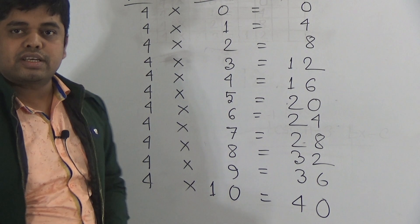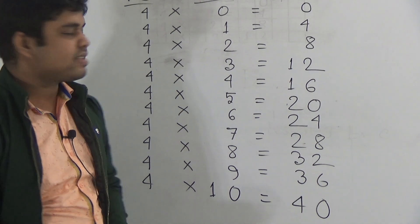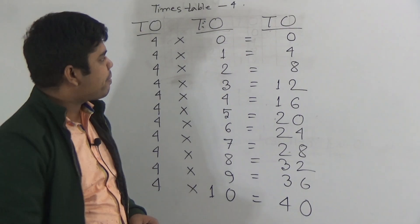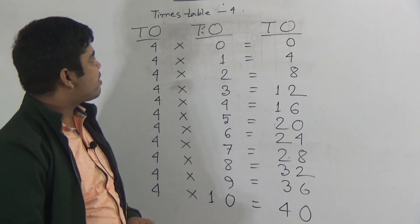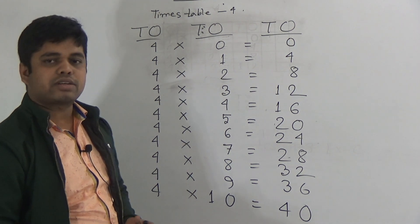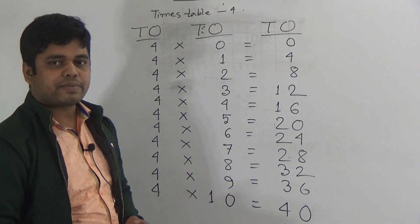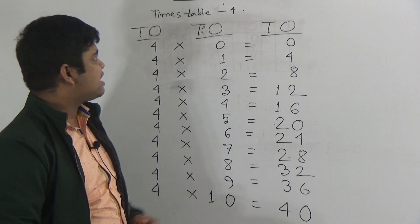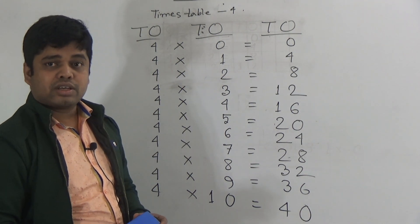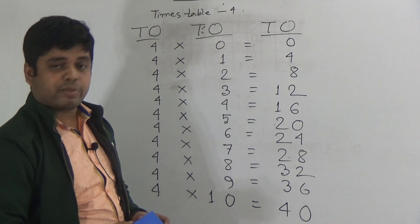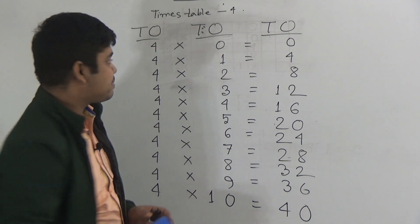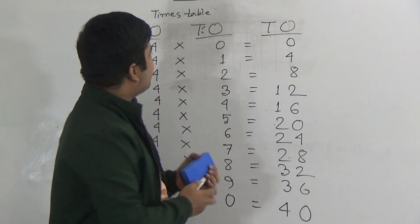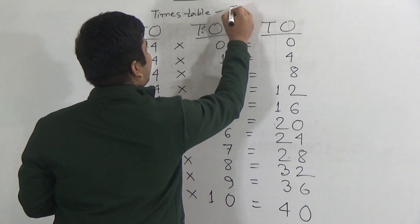So my dear students, you must memorize this just like this way. I hope you have understood. Now we shall start to write times table 5. Times table 5 is easier than times table 4 and it is so easy to memorize. So you must memorize this very carefully.